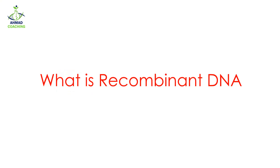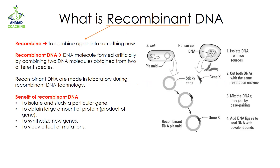Hello, today we are going to study about what is recombinant DNA. The word 'recombinant' comes from 'recombine,' which means to combine again into something new — making something new by combining different things. So recombinant DNA is a DNA molecule which is formed artificially by combining two DNA molecules.